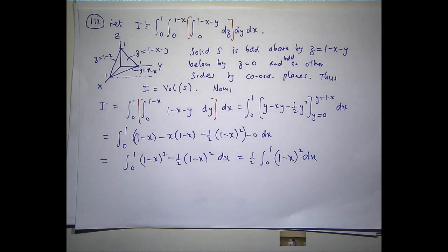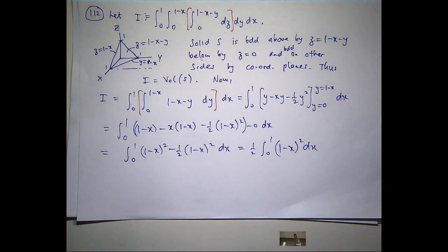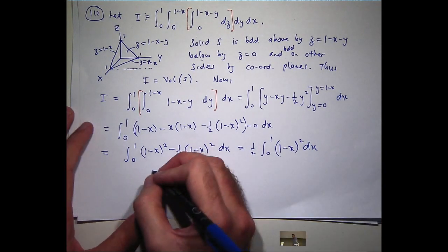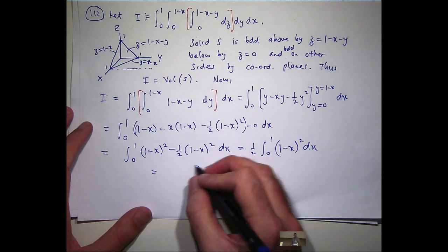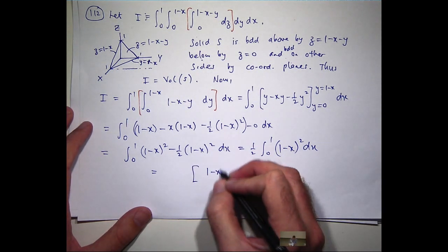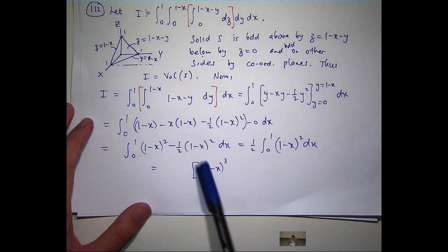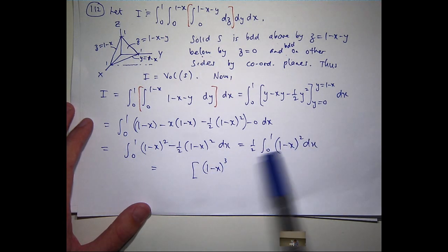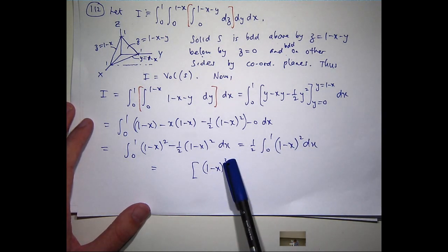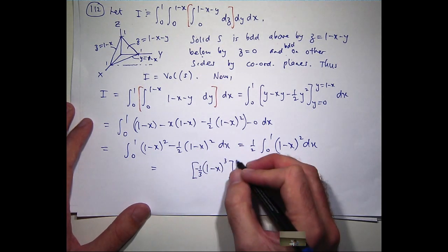I can integrate 1 minus x all squared. Well, what's it going to be? Well, this power is going to go to a 3. And then all I need to do is touch up something around here, maybe. So, if I differentiate this, I'm not quite going to get this. I'm going to get minus 3 at the front. So, to counteract that, I'm going to multiply by minus 1 third.